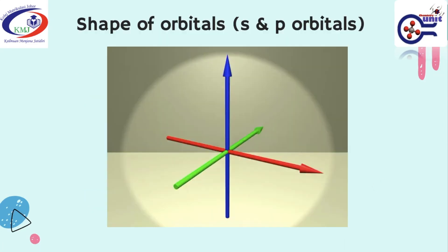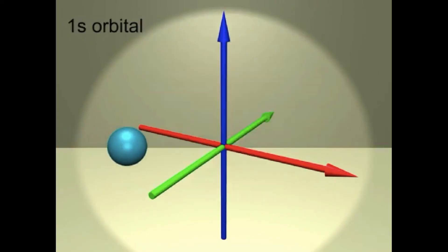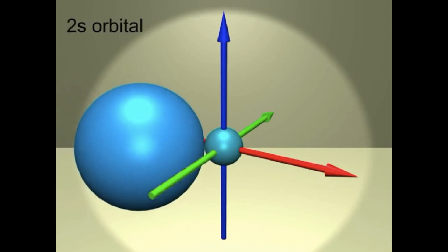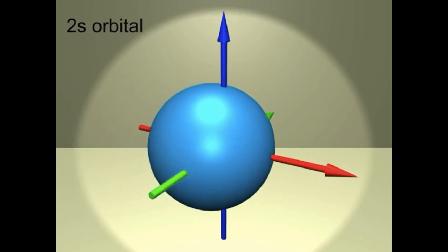This is a video of shape of orbitals for S and P orbitals. This is 1S-orbital. The next one is 2S-orbital. This orbital is bigger than 1S because its value of n is bigger.